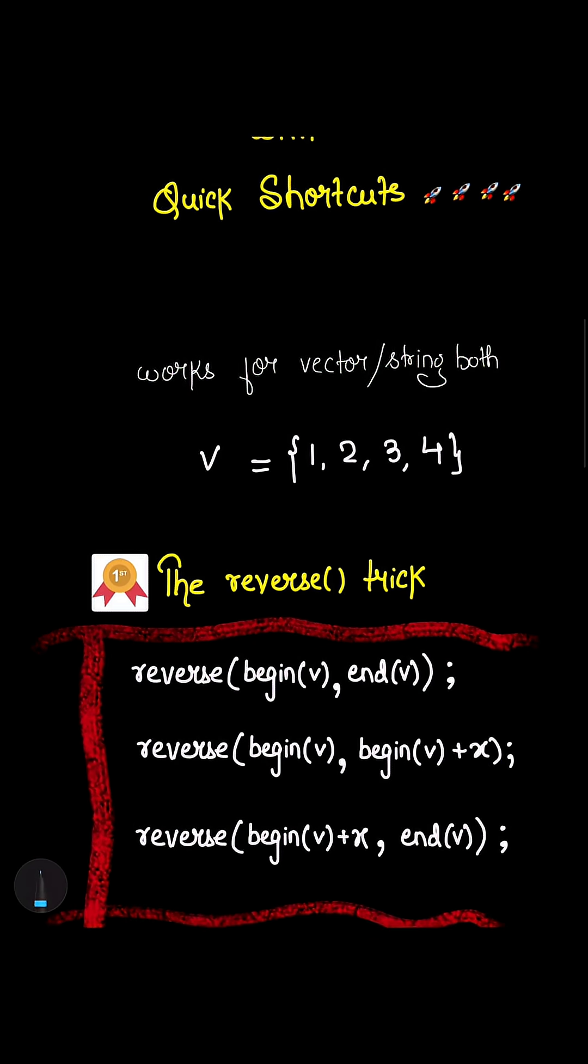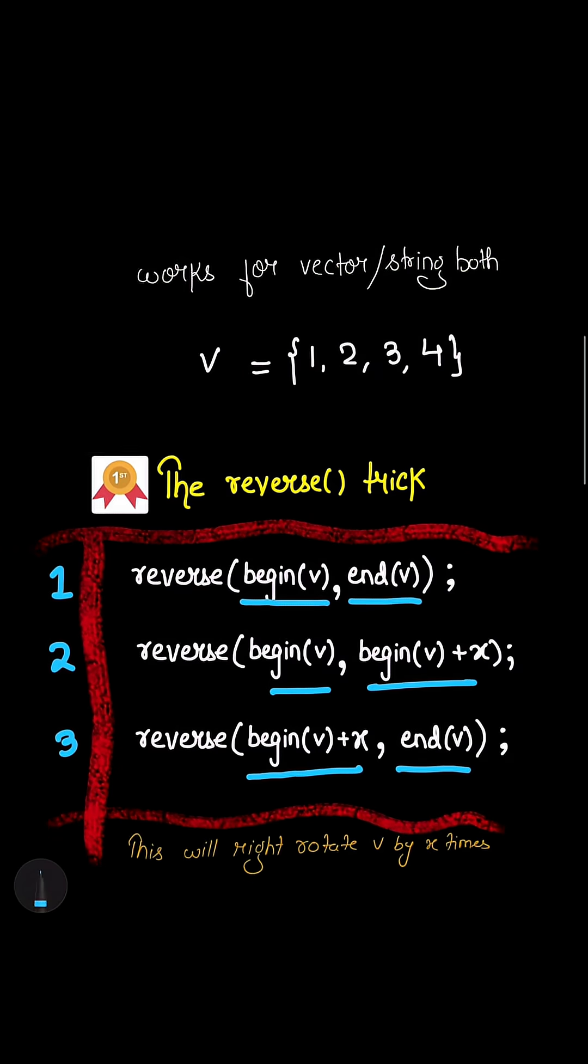You just have to first reverse the entire array, that is reverse begin v to end v, and then you have to apply reverse begin v till begin v plus x, and then you have to apply reverse begin v plus x till end of v. It will right rotate the vector by x times.